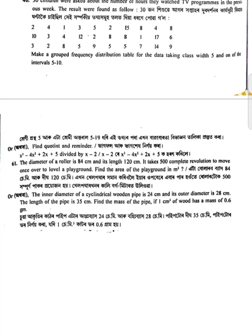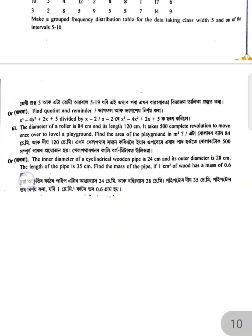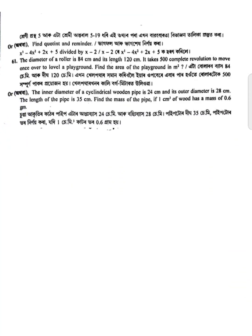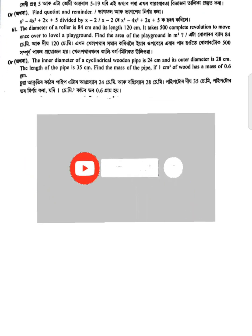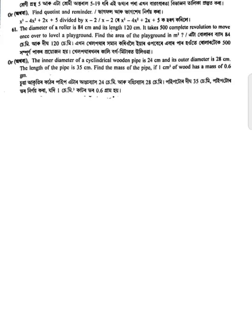Find the mass of a circular wooden pipe. The inner diameter is 24 cm and the outer diameter is 20 cm. The length of the pipe is 35 cm. Find the mass of the pipe, given that 1 cubic centimeter of wood has a mass of 0.6 grams.